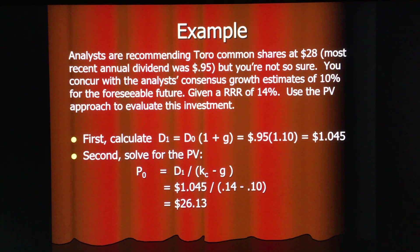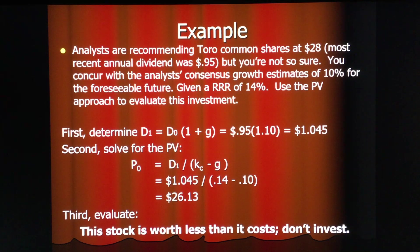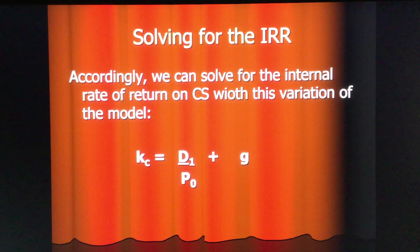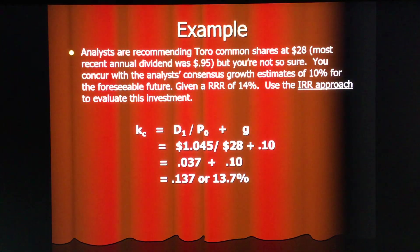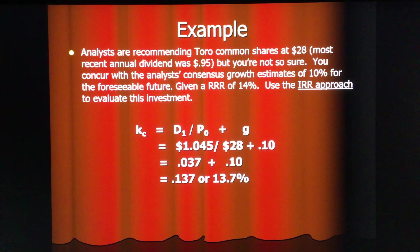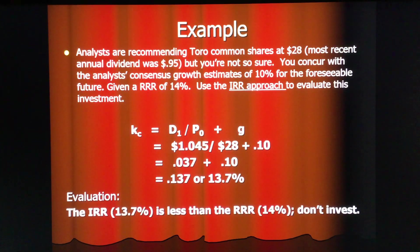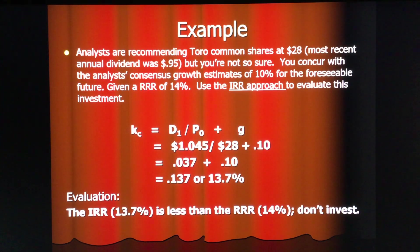That $26.13 is less than the market price of $28, so we would say the stock is not a good investment — it's worth less than it costs. Using the internal rate of return approach, solving for k sub c: the expected dividend yield of $1.045 divided by $28 equals 0.037, plus the expected growth rate of 10 percent, gives an IRR of 13.7 percent. Since the IRR of 13.7 percent is less than the required rate of return of 14 percent, we do not invest — the same reject result as the PV approach.